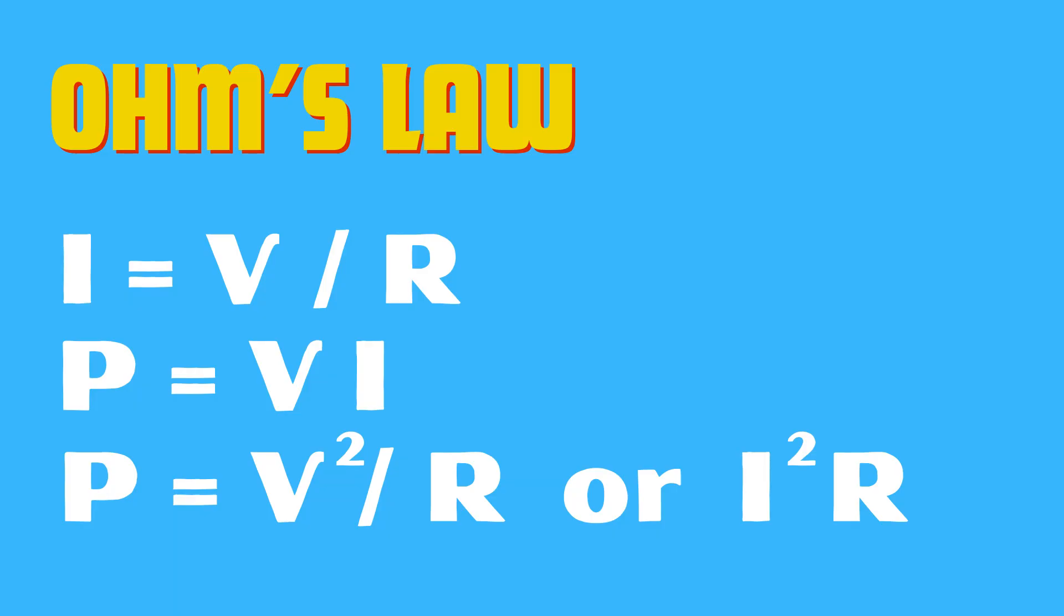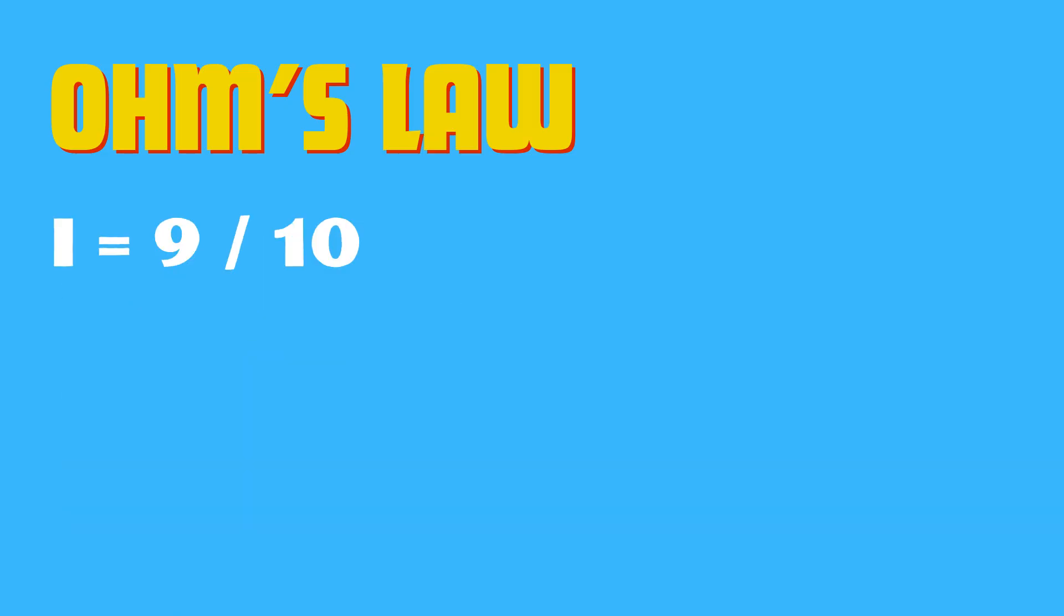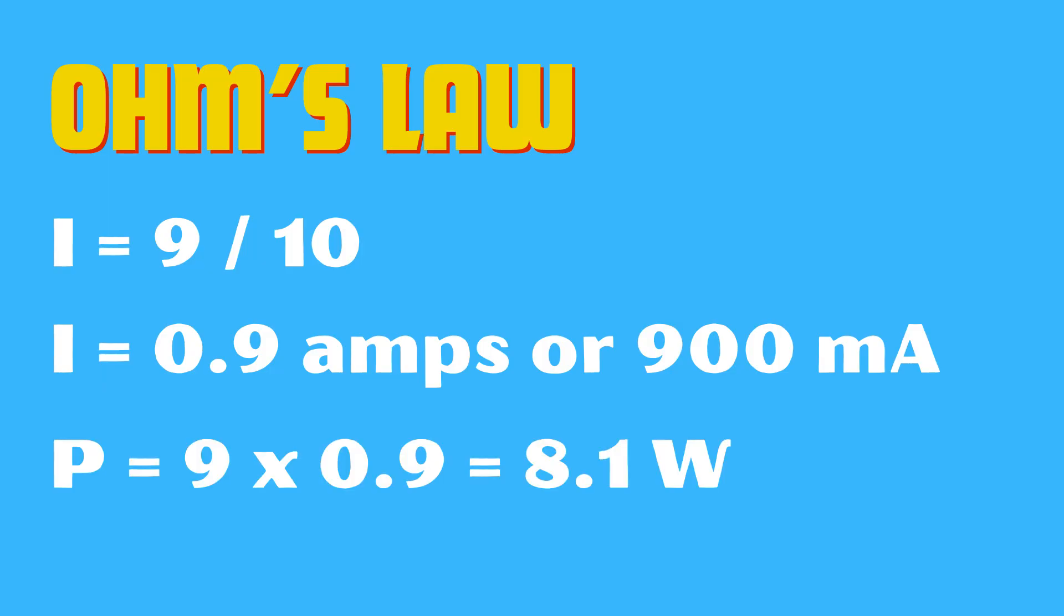In our demo, we applied 9 volts across a 10-ohm resistor. That means current equals 9 divided by 10 or 0.9 amps or 900 milliamps through that little cylinder. Multiply back for power, power equals 9 times 0.9 or 8.1 watts.